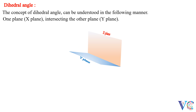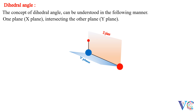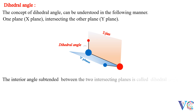Now let us understand the concept of dihedral angle by considering a portion of an organic molecule. The front carbon atom, rear carbon atom, and atom or group of atoms bonded to the rear carbon atom — these three are in one plane. The rear carbon atom, front carbon atom, and atom or group of atoms bonded to the front carbon atom are viewed in the other plane. The interior angle subtended between the two intersecting planes is called dihedral angle.